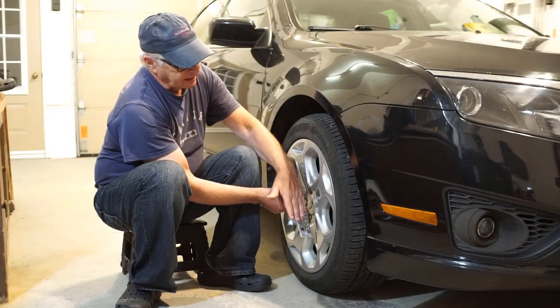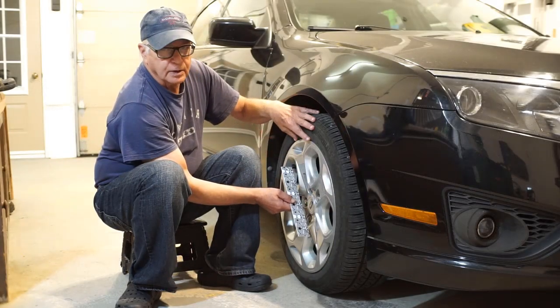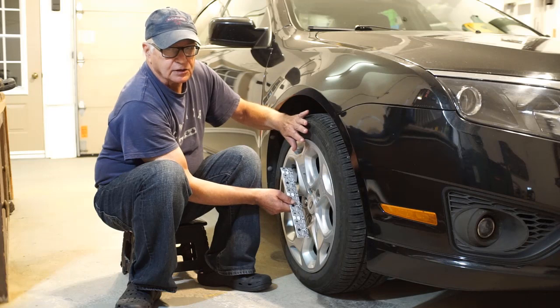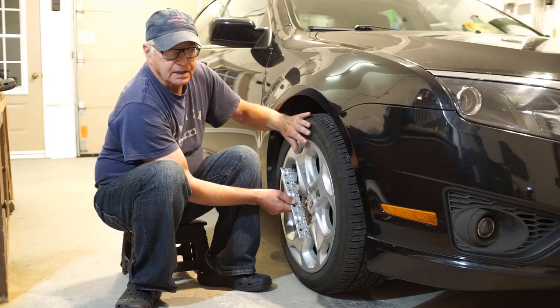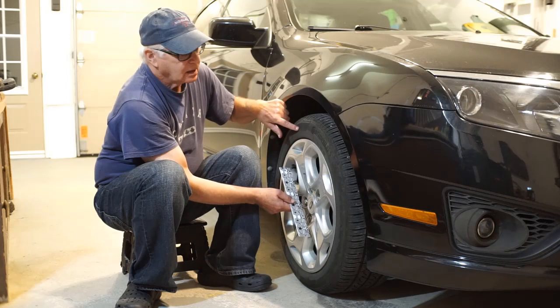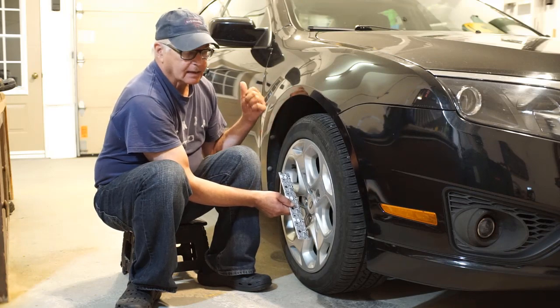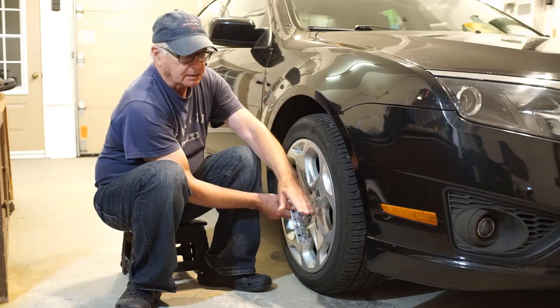Caster is that imaginary line about which the wheel will steer. It's always positive, which means that the upper steering point is always further back than the lower steering point.